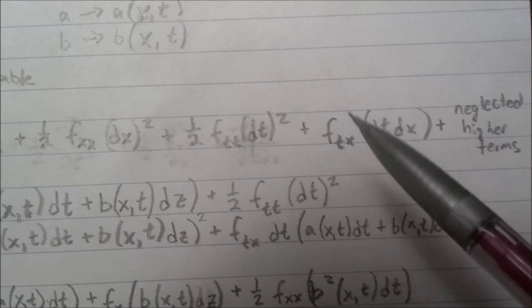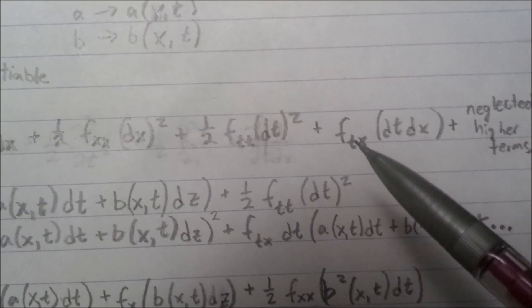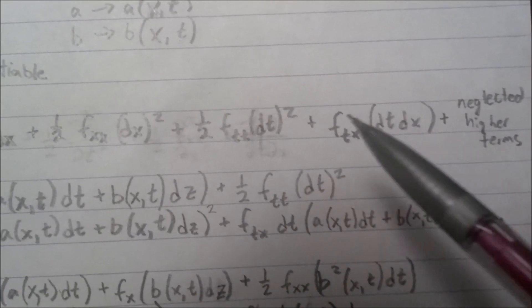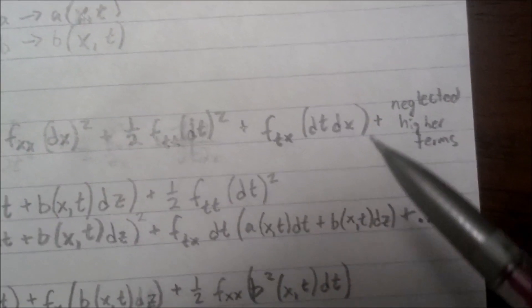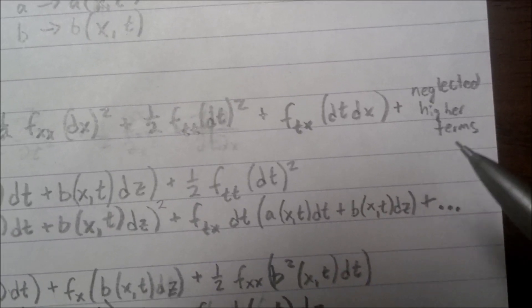And then you'll have two halves, f with respect to x dt dx, and because there's two of them, we'll combine them and just make one. And you will have higher order terms, of course, but we're going to neglect them.